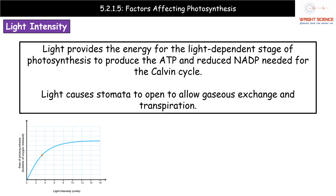Factor number two is light intensity — again one we looked at at GCSE. There are two aspects to bear in mind. First, light provides the energy required for the light-dependent stage of photosynthesis, producing ATP and reduced NADP. Those products must feed into the Calvin cycle in the light-independent stage. Greater light intensity therefore leads to greater amounts of those products.